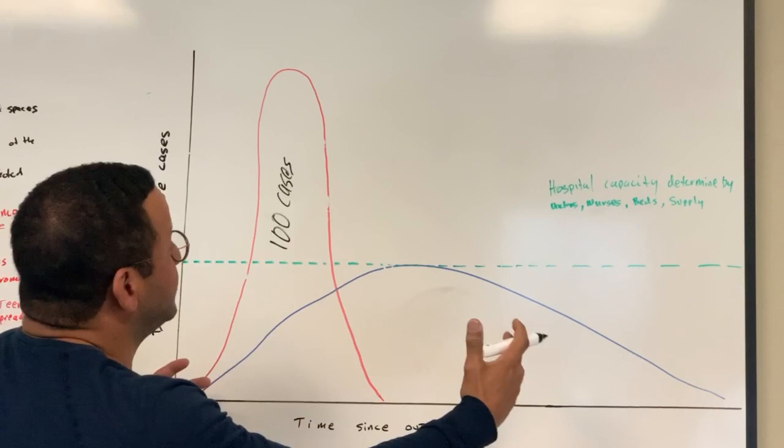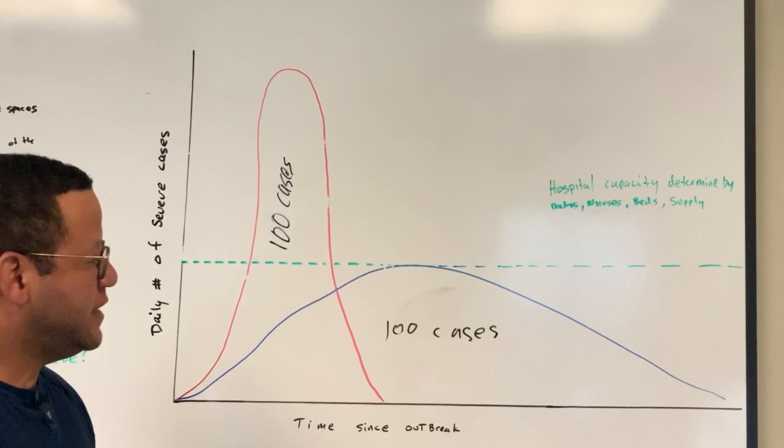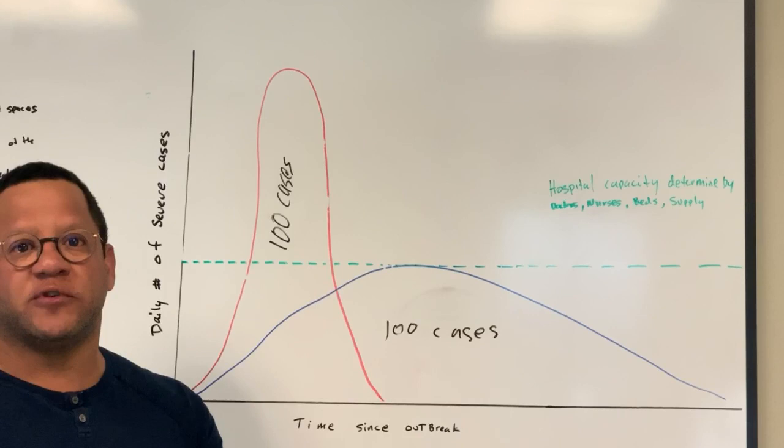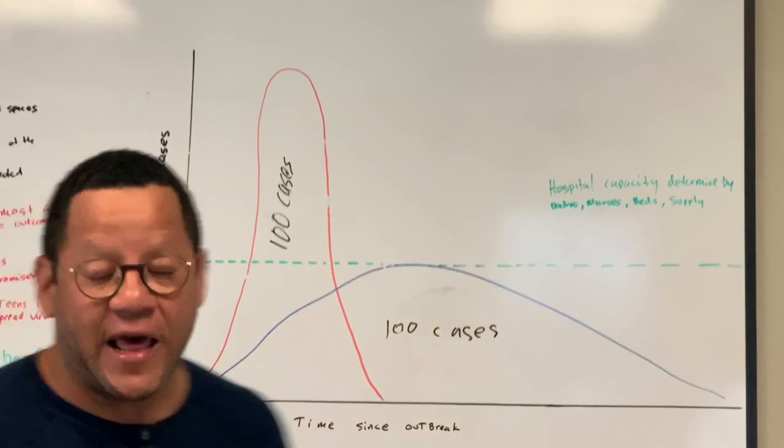Now, if we do all the things that we've been told to do up to this point, we can actually stretch that curve out and still have 100 cases, but over a long period of time, which your hospital will be able to manage. This is very important because in a small community like this, our hospitals are very important. If our hospital becomes overwhelmed, there'll be a trickle effect on all of us. So very important to understand this and to know that we have control at flattening the curve.